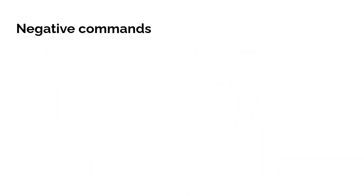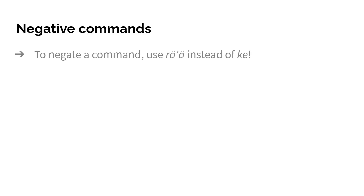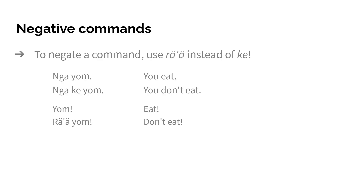One last thing: negative commands. To negate a command, use 'rä'ä' instead of 'ke.' For example, 'nga yom' means 'you eat,' and 'nga ke yom' means 'you don't eat.' But if I now use a command, I would say 'yom' for 'eat,' and to negate it — to prohibit it — I say 'rä'ä yom,' meaning 'don't eat.' In the normal sentence we need 'ke' because it's a statement; in the command we need 'rä'ä' because it's a prohibitive. 'Rä'ä' can also go after the verb to intensify it — 'yom rä'ä' would be like a stronger 'don't eat!'